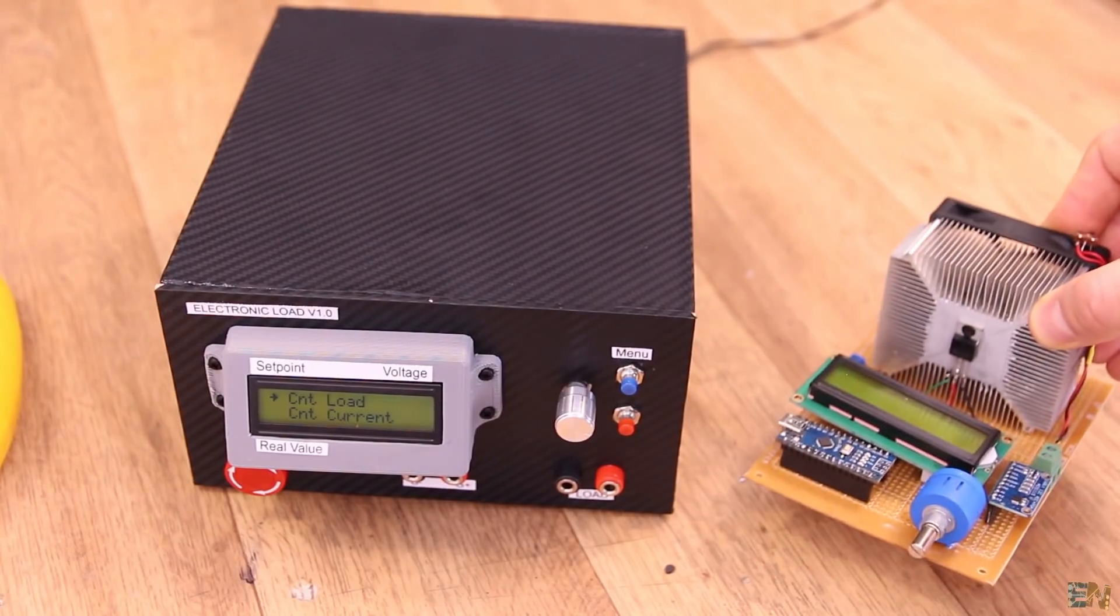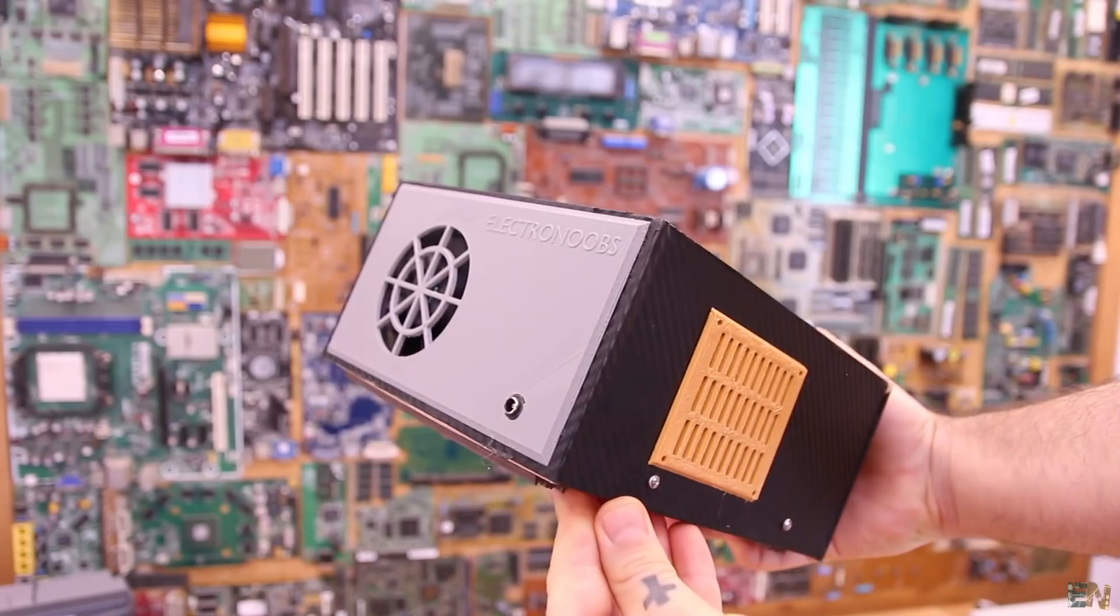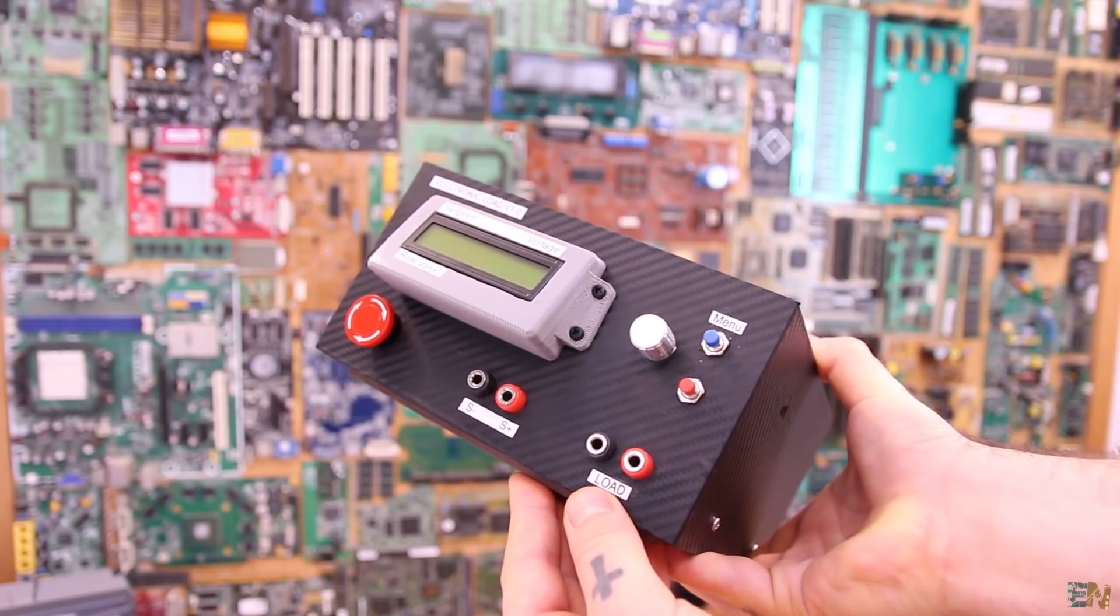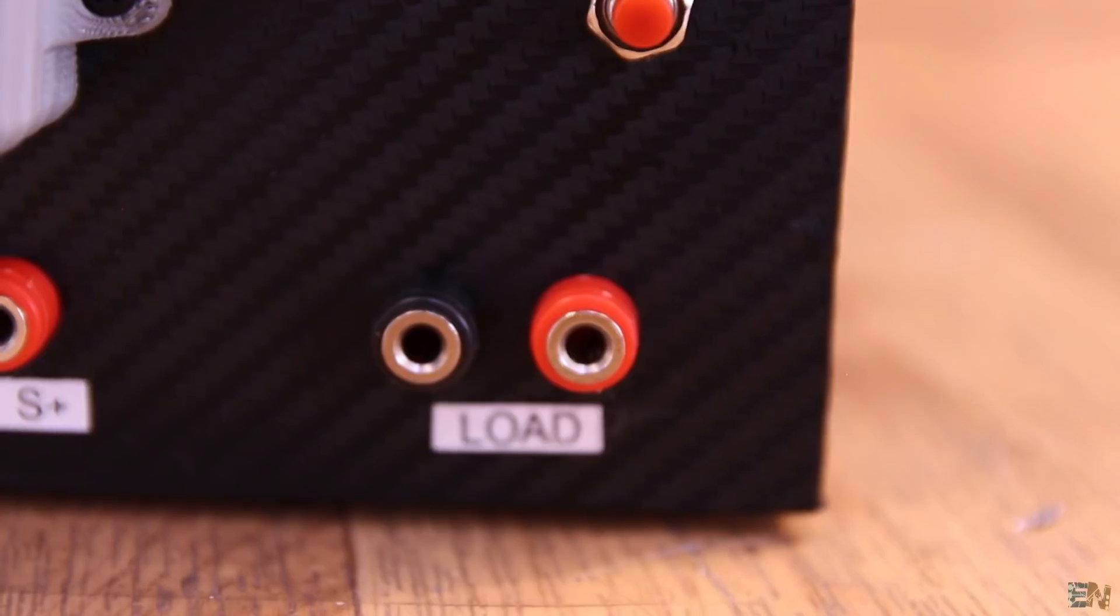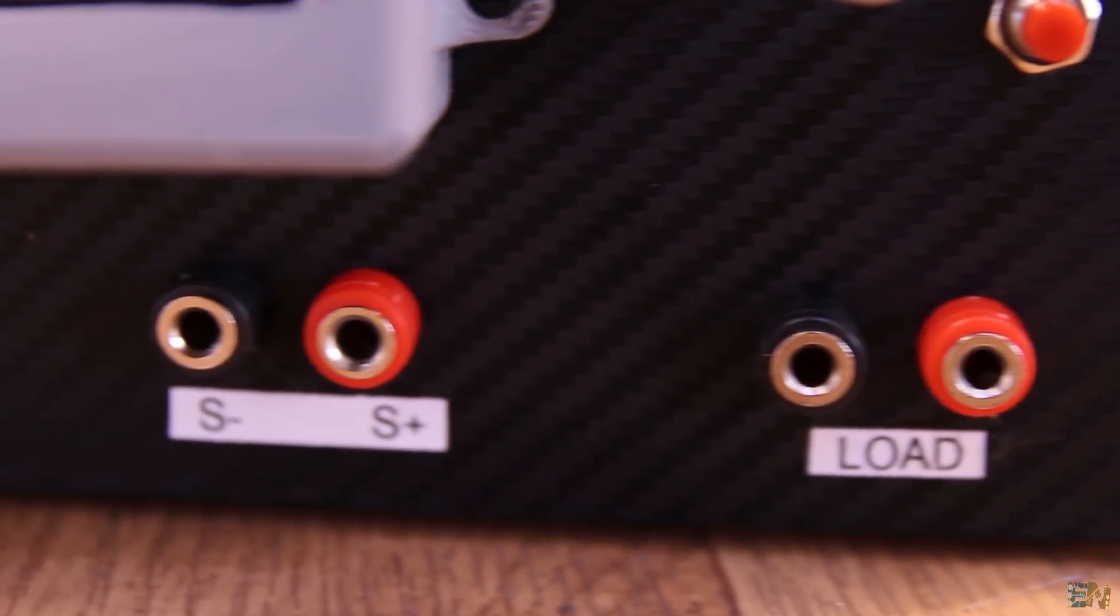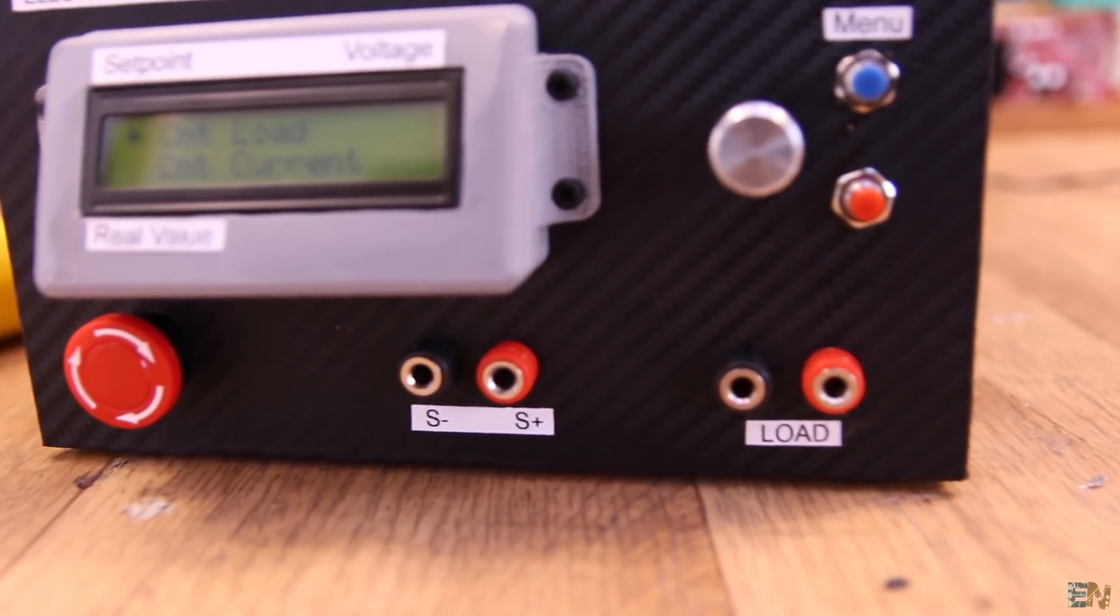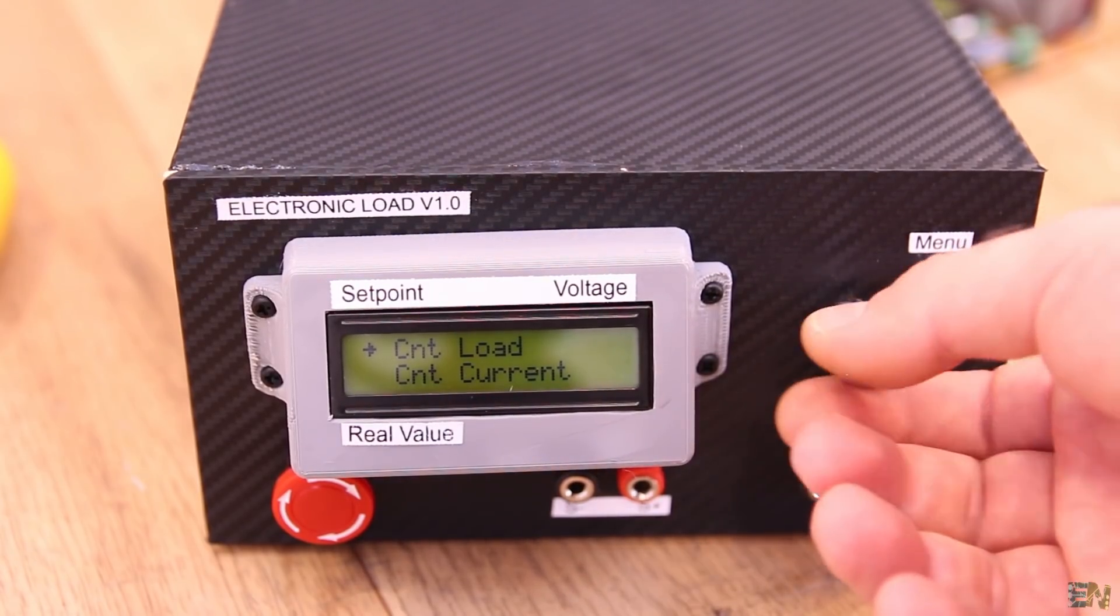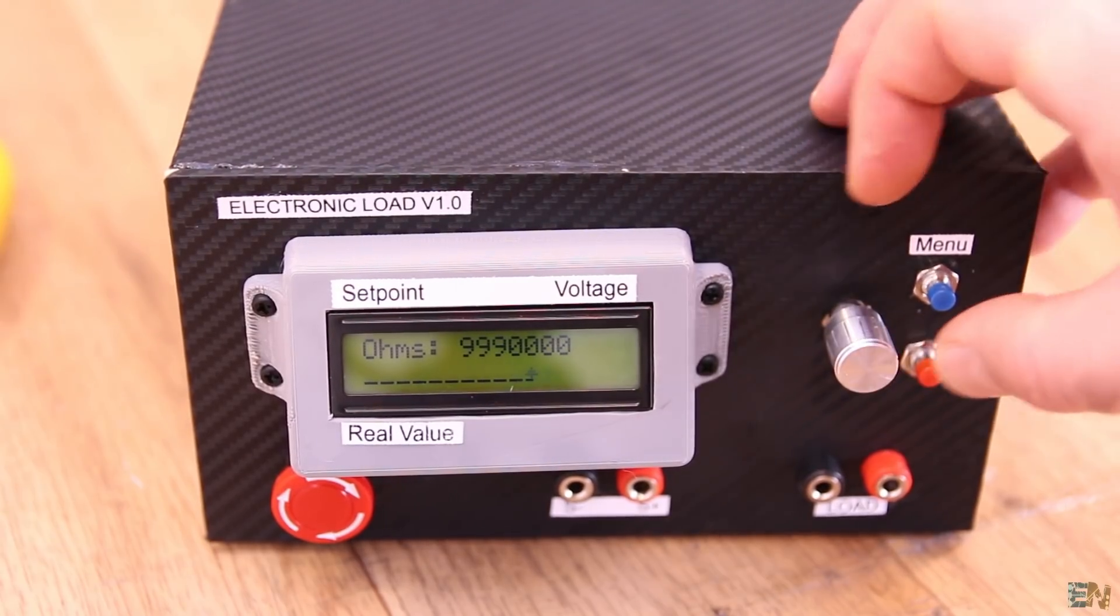So this new version now has a case because I wanted to make it more permanent. The case is made out of plywood with some 3D printed parts and I've also applied a carbon fiber vinyl to make it look better. On the front we have two main plugs and these are the load input connections. We have these other two connectors here and these are the compensation probes for measuring the voltage at the same time. We print the values on this LCD screen. To set the values, we use this rotary encoder.